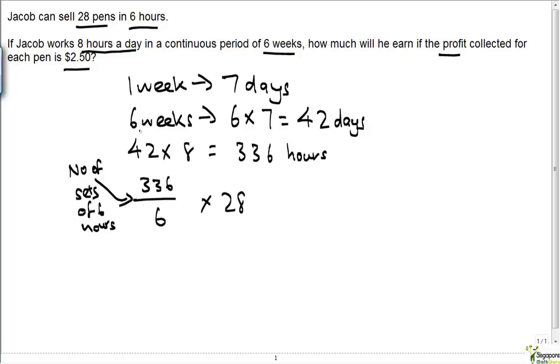So for every set of 6 hours, Jacob sells 28 pens. For a certain number of sets of 6 hours, he would sell a certain number times 28 pens. So that will work out to be 1568 pens.